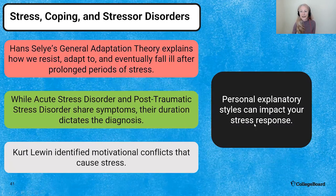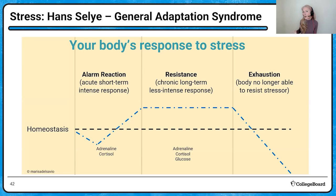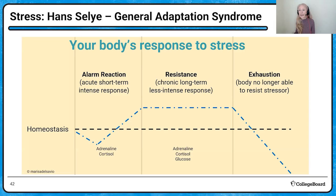Moving on to stress, coping, and stressor disorders. We'll look at explanatory styles and how they can impact your stress response, and Hans Selye's general adaptation theory. Here's your body's response to stress: your body is at homeostasis, then there's a stressor — like you hear about a college application deadline you didn't know about. First comes alarm reaction — an acute, short-term, intense stress response. Adrenaline is released, making your heart race. Cortisol is released, suppressing your immune response and preparing your body for fight or flight. Then you get resistance, and as you approach the deadline you might get exhausted — your body's no longer able to handle the stressor. That's what Hans Selye called the general adaptation syndrome.